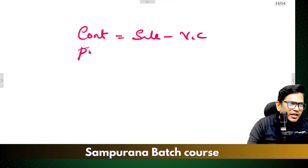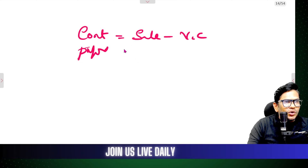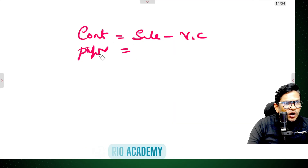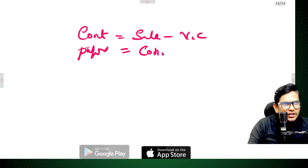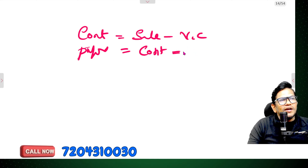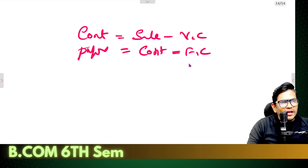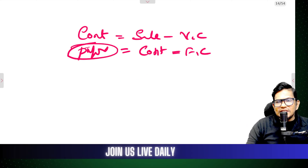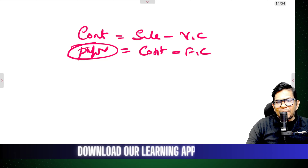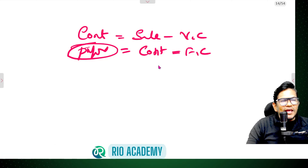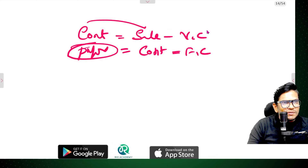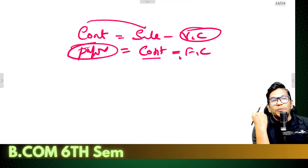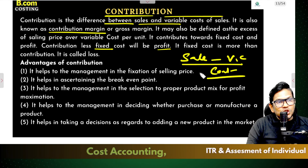Contribution less fixed cost will be profit. So profit is equal to contribution minus fixed cost. Contribution is equal to sales minus variable cost; profit is equal to contribution minus fixed cost.